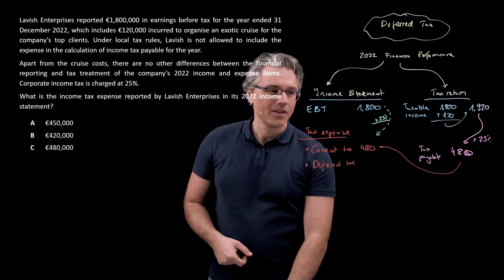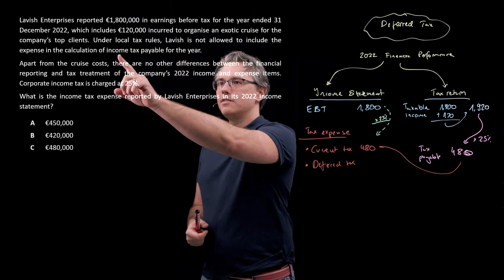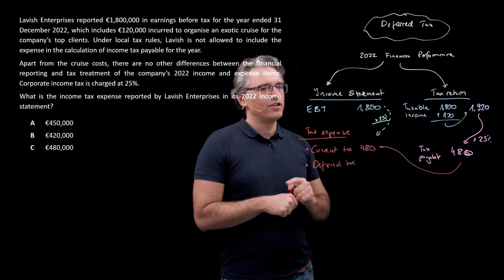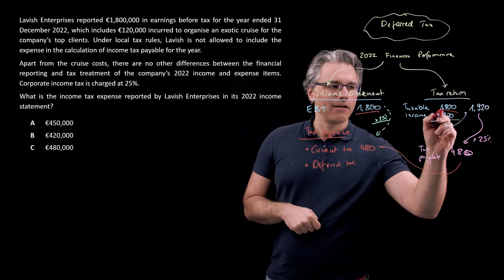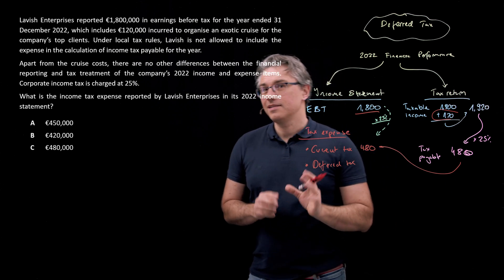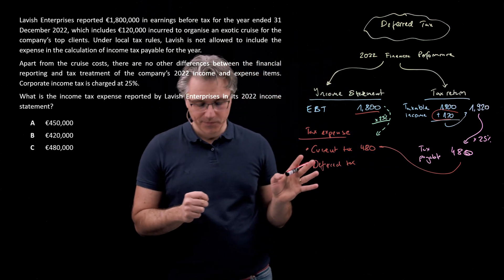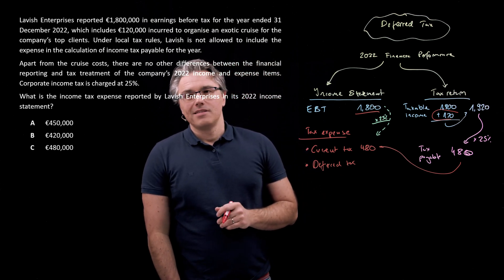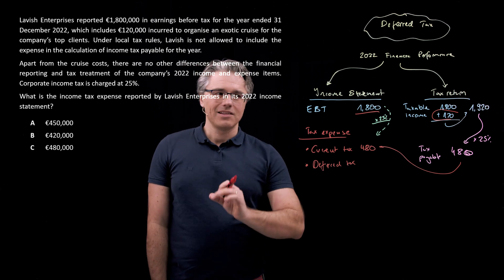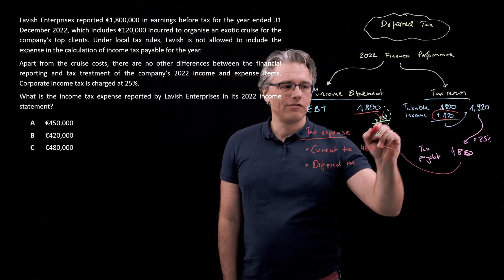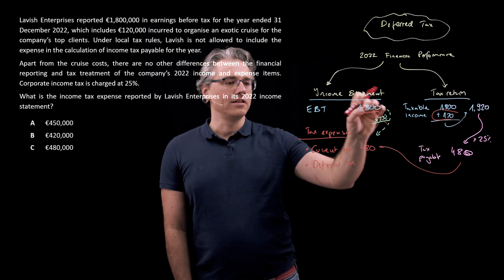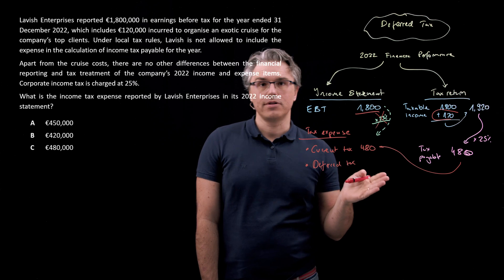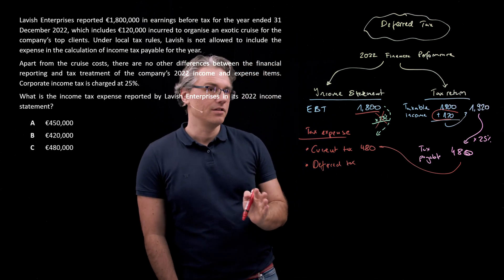In this case, we've got an expense of 120,000 associated with the organisation of a cruise, which has been included here, left out of here. But this leaving out is not temporary, it's permanent. And in the case of permanent differences, there is no way this is going to reverse. And this argument of deferred tax playing a certain role in equating the effective tax rate with the statutory tax rate will not play out, will not hold.